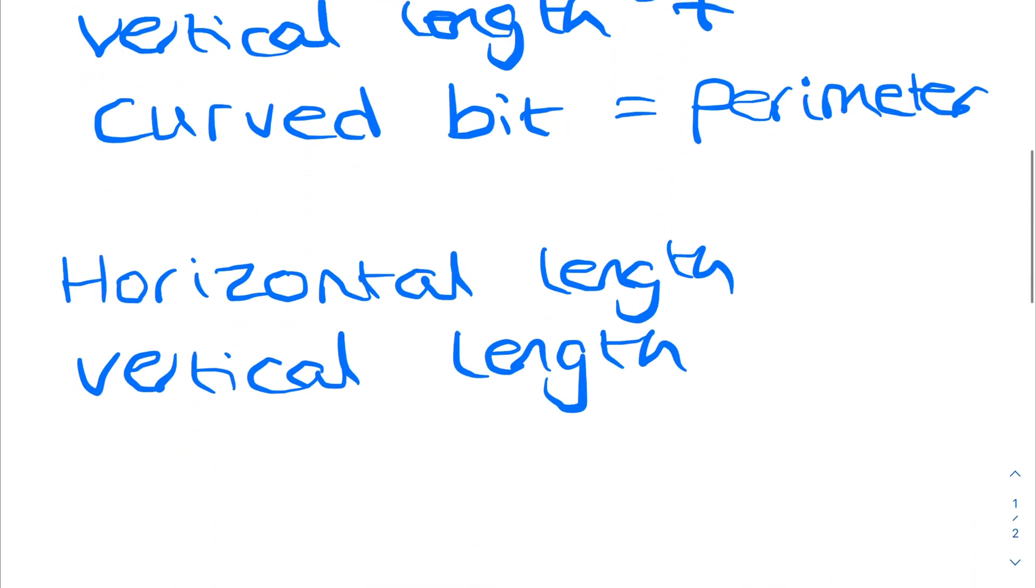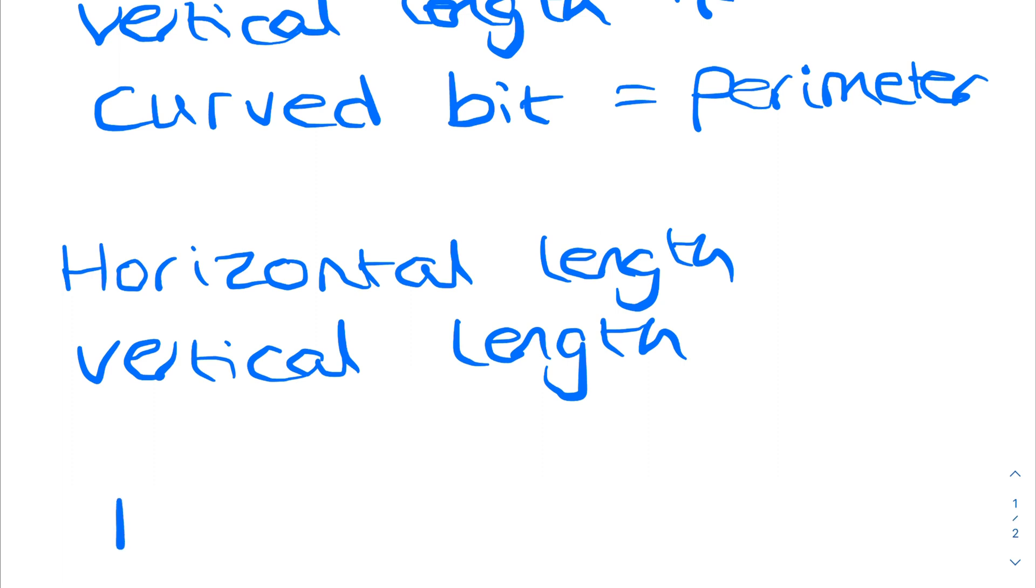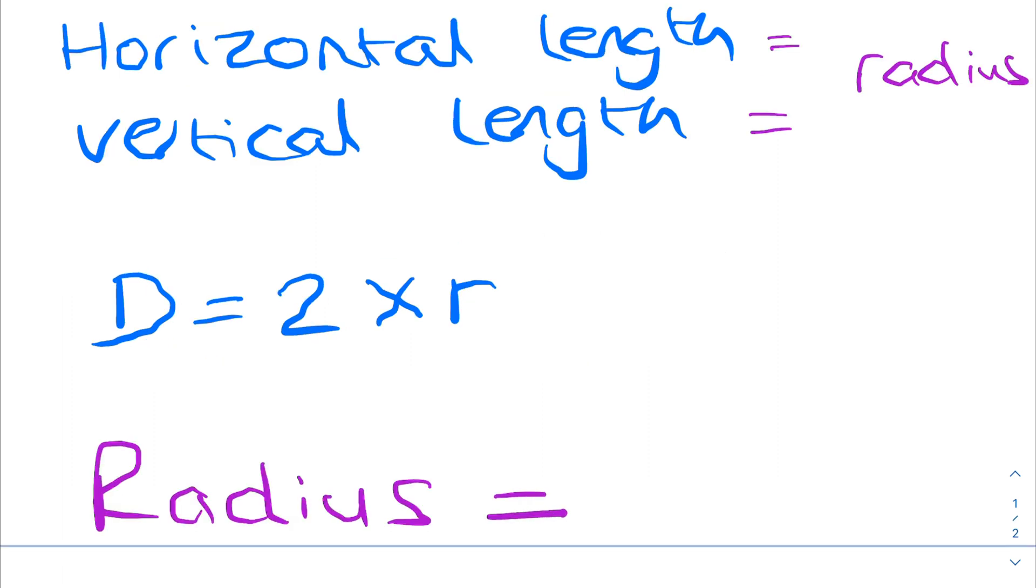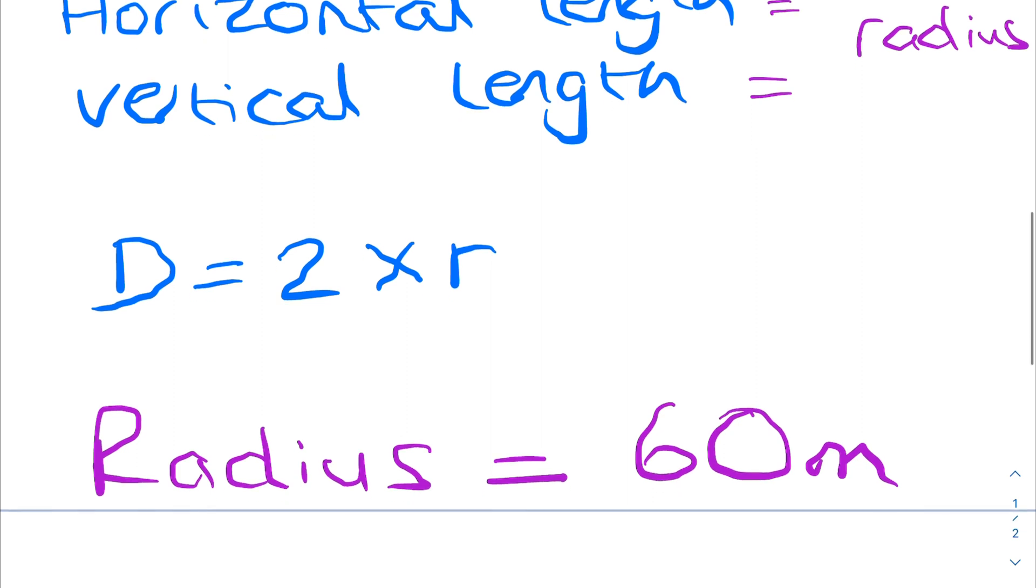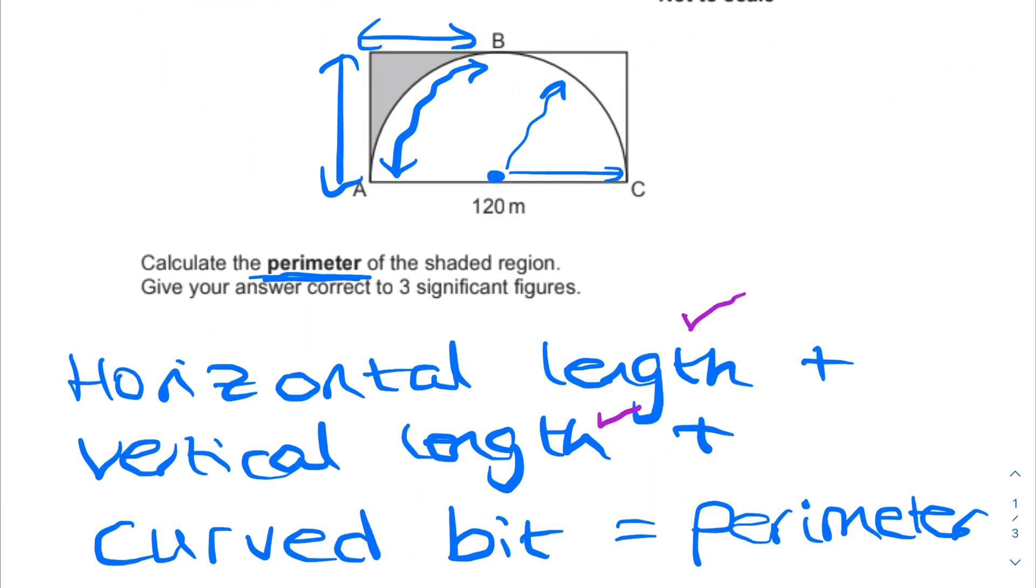The diameter is the length from one side of the circle to the other. The formula is diameter equals 2 times r. So the radius for this question is 120 divided by 2, which is the diameter divided by 2, which equals 60 meters. So horizontal and vertical length is 60 meters each using our circle knowledge.